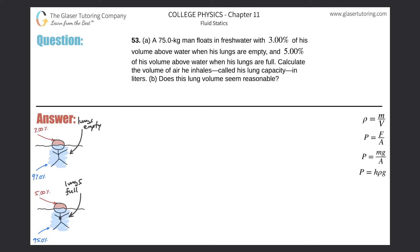Number 53, letter A. A 75 kilogram man floats in fresh water with 3% of his volume above water when his lungs are empty, and 5% of his volume above water when his lungs are full. Calculate the volume of the air he inhales — called his lung capacity — in liters.